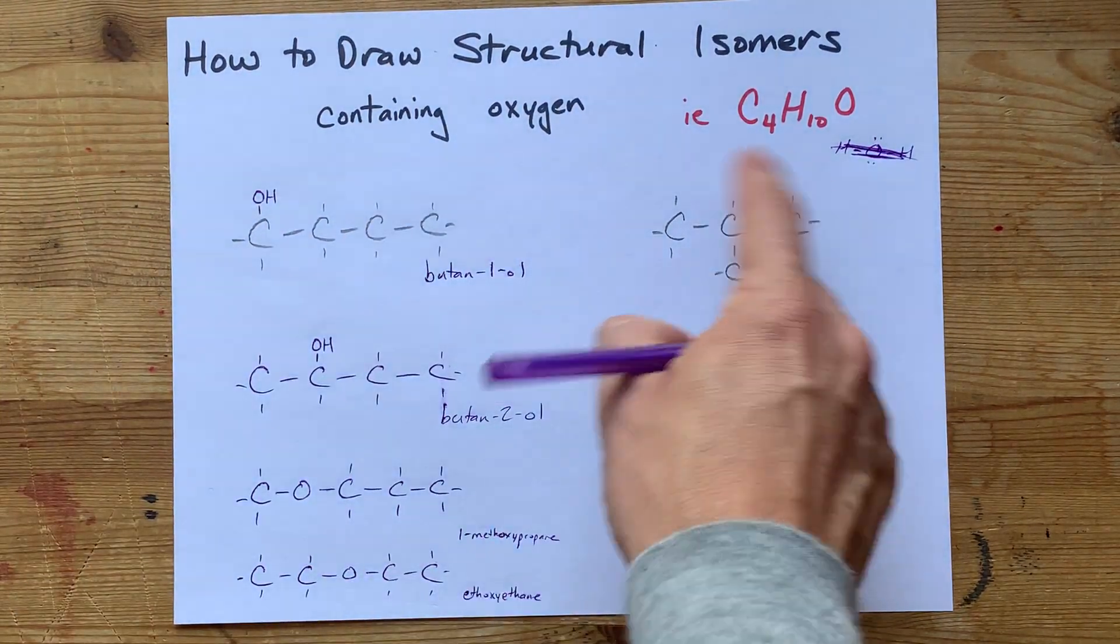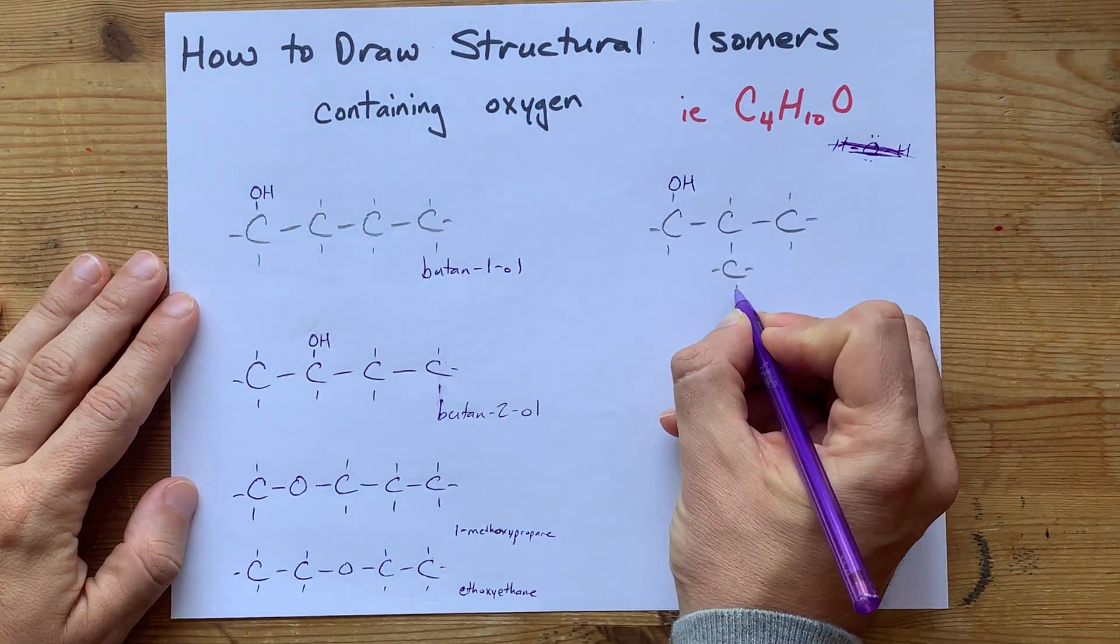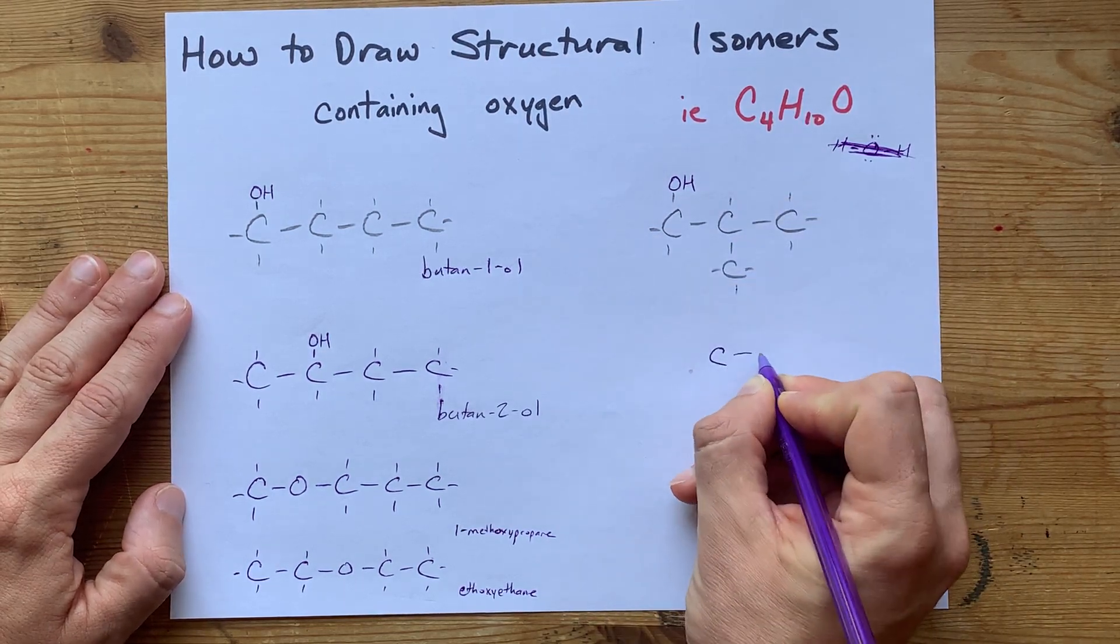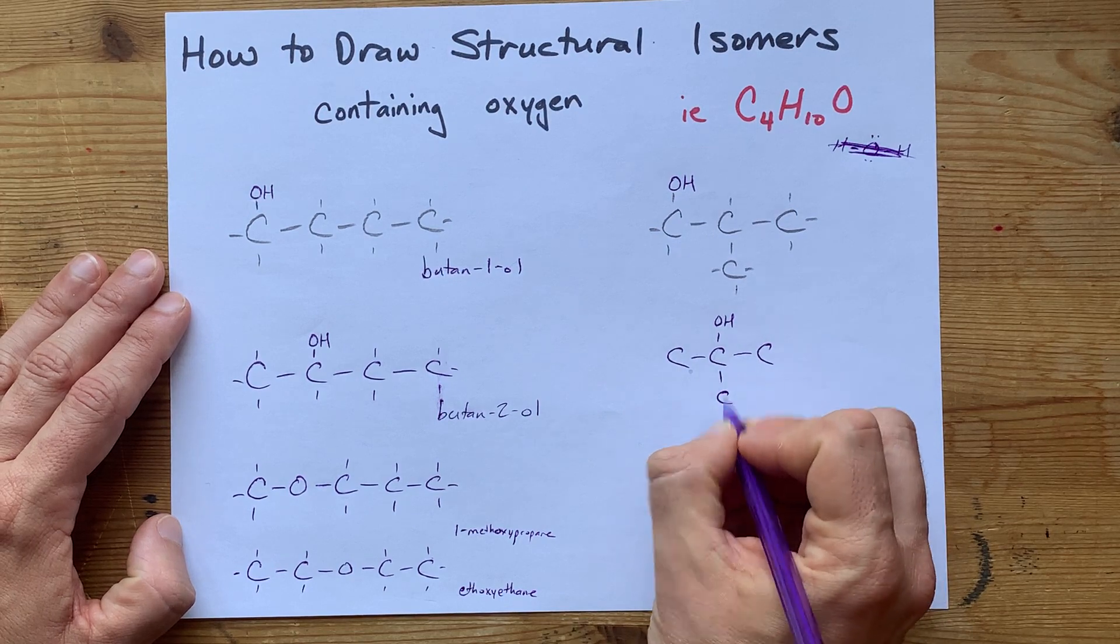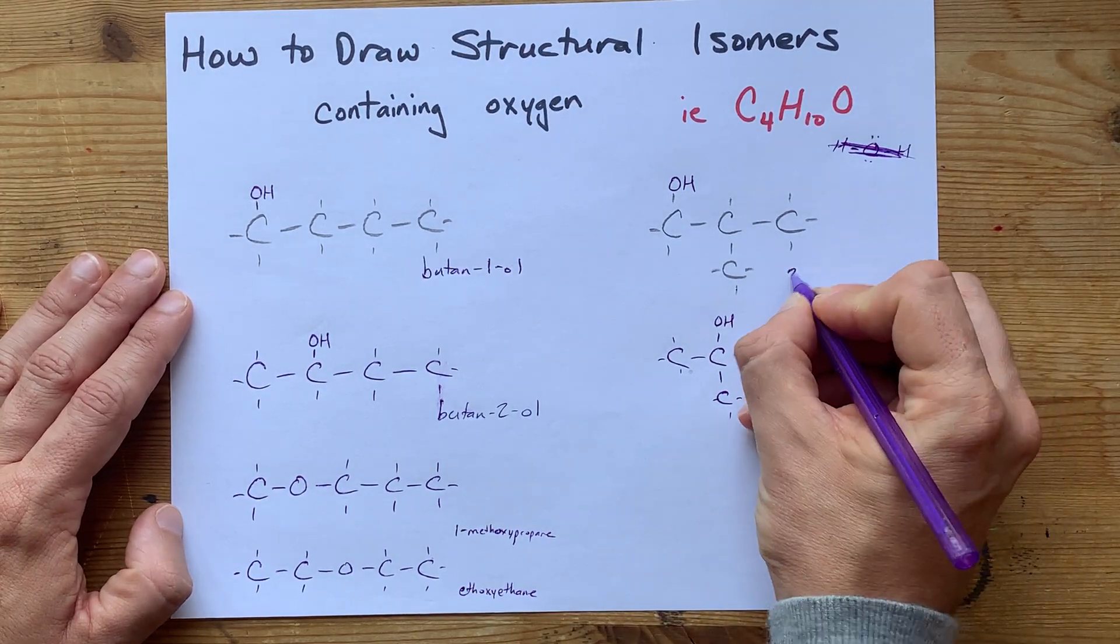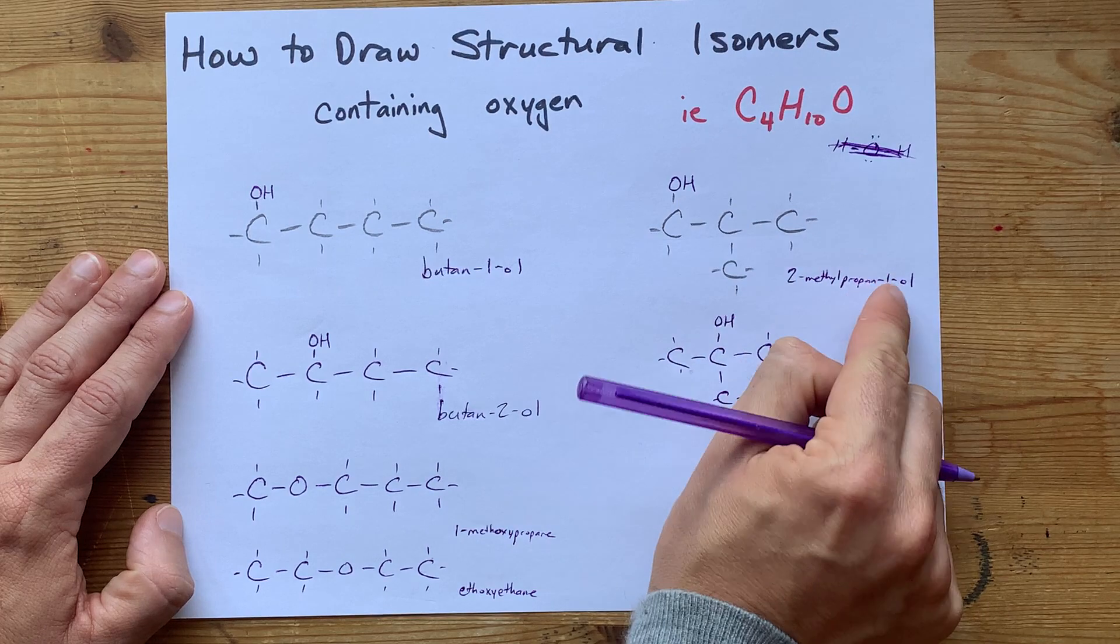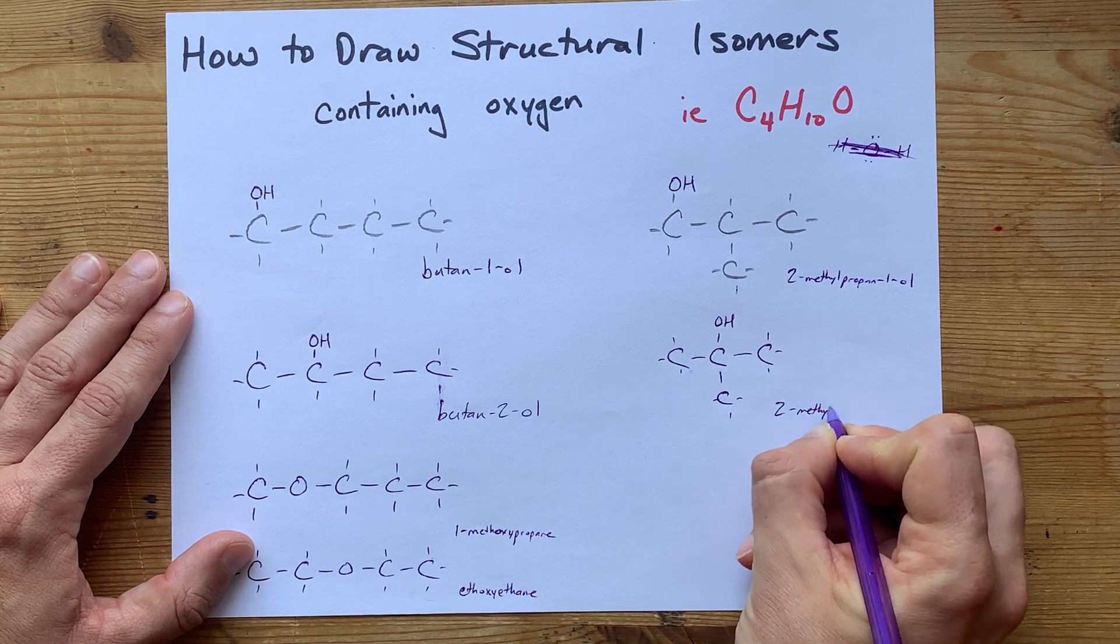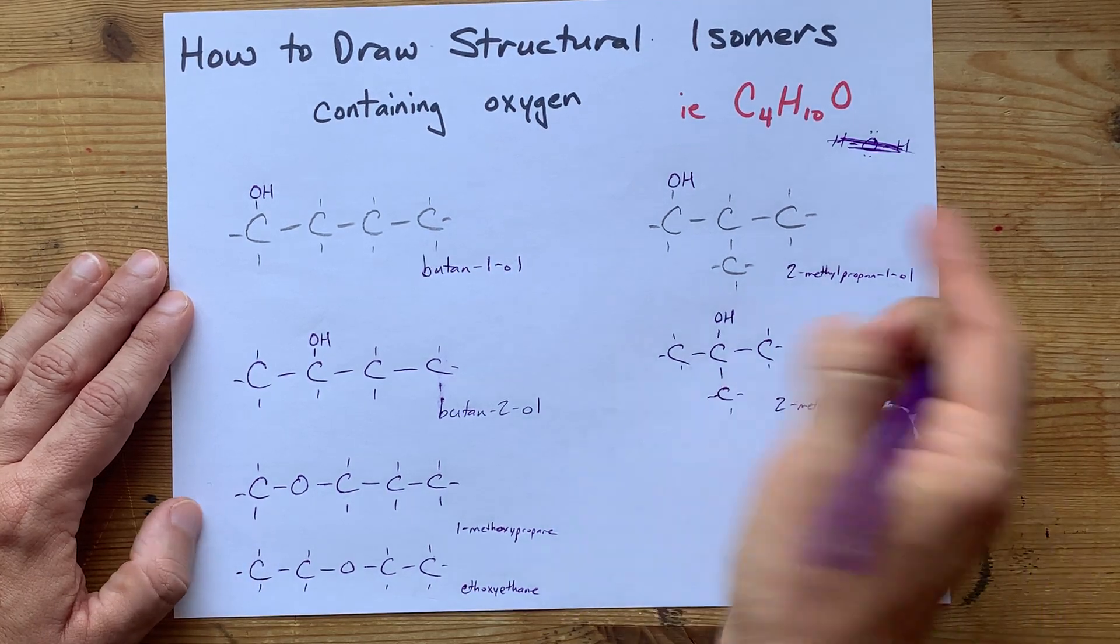Now, where could I put the O here on the isobutane structure? Let's do the alcohols first. I could put the O here. If I put it on this carbon, I have basically the same molecule again. The only other place I could put it that makes it a unique alcohol is on this second carbon, because then at least the OH is connected to the same carbon that the methyl group is. Here I have 2-methyl-propan-1-ol. It's a propanol with the alcohol group on carbon 1 and a methyl group on carbon 2. And this one is 2-methyl-propan-2-ol, because the alcohol group is also on carbon 2.